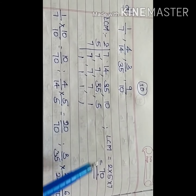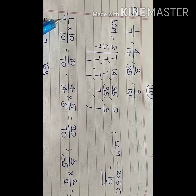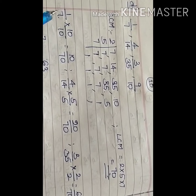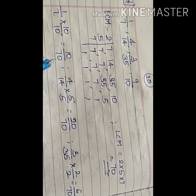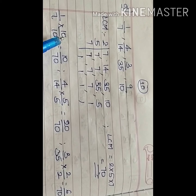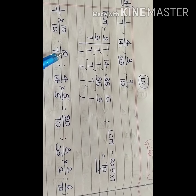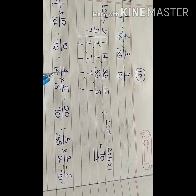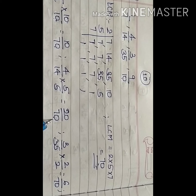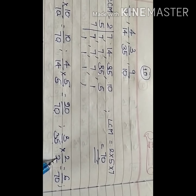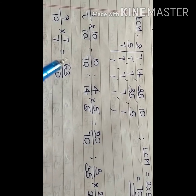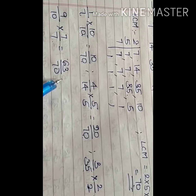Convert all fractions to have denominator 70. For 1 upon 7, multiply by 10 to get 10 upon 70. For 4 upon 14, multiply by 5 to get 20 upon 70. For 3 upon 35, multiply by 2 to get 6 upon 70. For 9 upon 10, multiply by 7 to get 63 upon 70. Remember, the denominator decides which number to multiply by to reach the LCM.